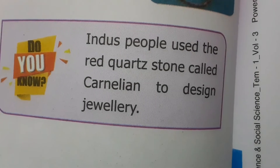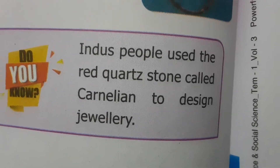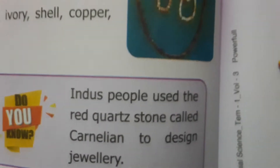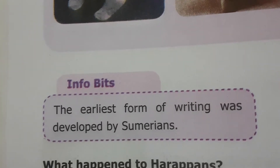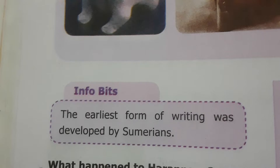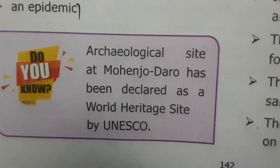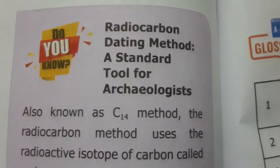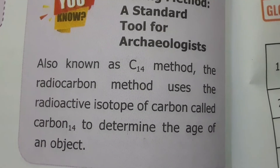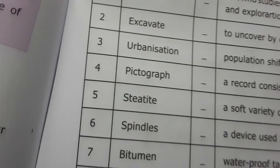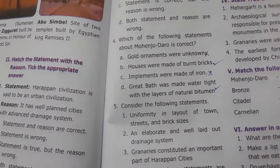Indus people used a red quartz stone called carnelian to design jewelry. The earliest form of writing was developed by Sumerians. The archaeological site at Mohenjo-daro has been declared a World Heritage Site by UNESCO. Radio carbon dating, known as the C14 method, is a tool for archaeologists to find out the age of an object.